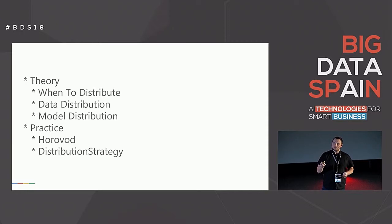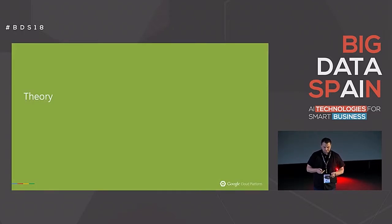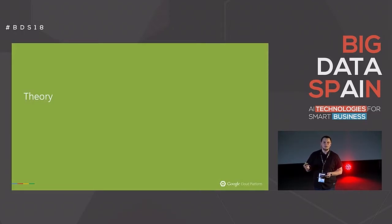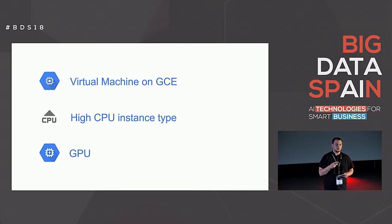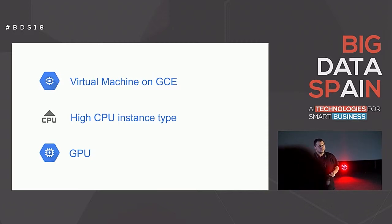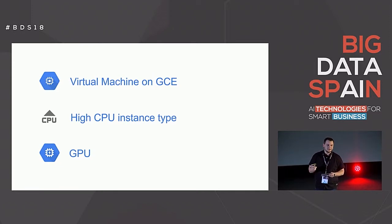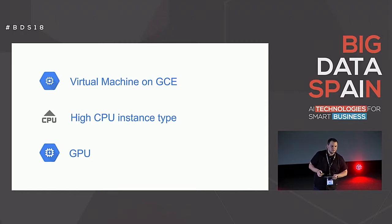Let's start with theory. Before we jump in, a few simple icons I'll be using — these are official Google Cloud icons. The first is a virtual machine on Google Compute Engine. The second means a VM that is a high-CPU instance without a GPU. And the third icon is a GPU. I know the GPU icon looks kind of the same as a VM on GCE, but these are the official icons, so just bear with me.